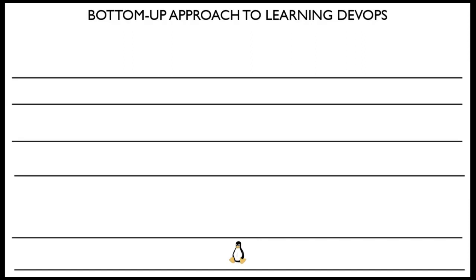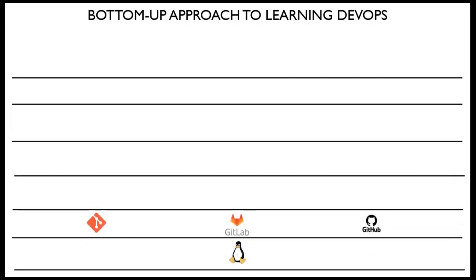Start from a solid base so that by the time you enter the job market or freelance, your understanding is strong. Once you're confident with Linux, move up to Git. Whether it's GitLab, GitHub, Bitbucket, or AWS CodeCommit, they all use the same Git command line — git push, git add, git commit, git rebase, git branch.